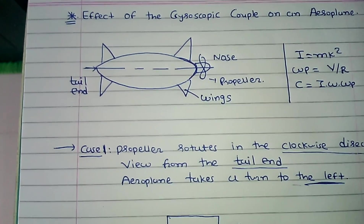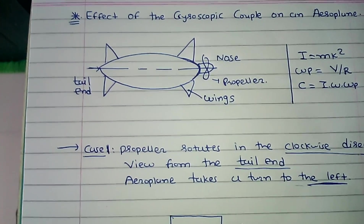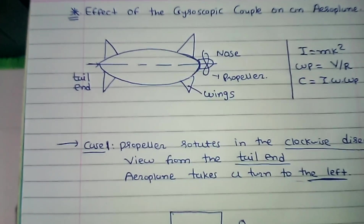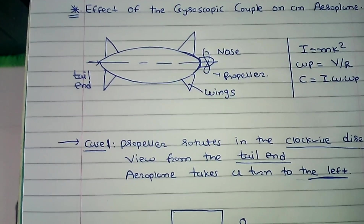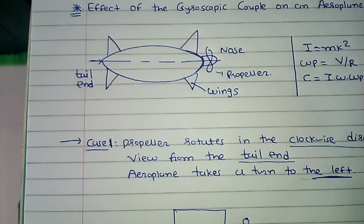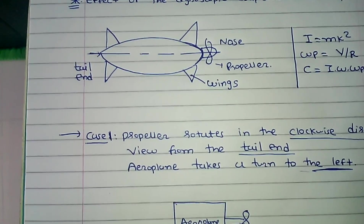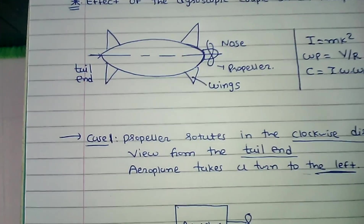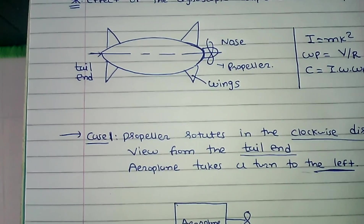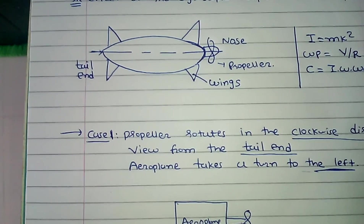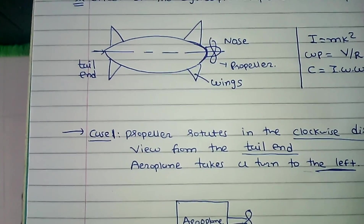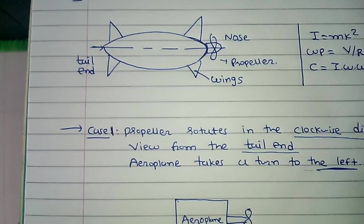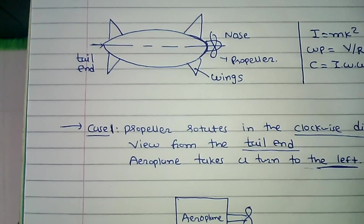In aeroplane examples, calculations are very simple. We use only 3 to 4 equations, but students have some problem in the last step related to the effect of reactive gyroscopic couple. Today I tell you the easiest way to find which part raises or which part dips due to gyroscopic couple, without any rule.